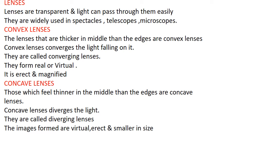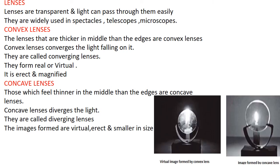Now we are going to study what are lenses. Lenses are transparent and light can pass through them very easily. They are widely used in spectacles, telescopes, and microscopes. The lenses that are thicker in the middle than at the edges, we call them as convex lenses. Convex lenses converge the light falling on them — they are also called converging lenses. They form real or virtual images, but the images are erect and magnified.